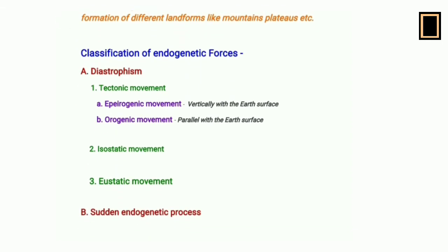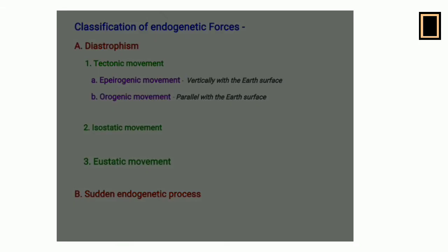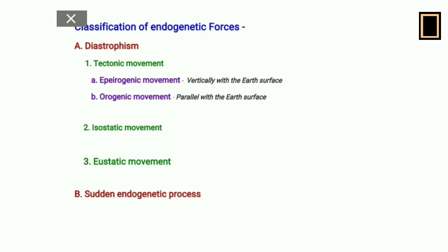Classification of endogenetic forces is of two types: number one is diastrophism, and another is the sudden endogenetic forces. In the case of diastrophism, a vast extended area of the earth's surface will modify or create a new landform at a slow, steady rate. Diastrophism has three categories of movement: tectonic, isostatic, and eustatic.